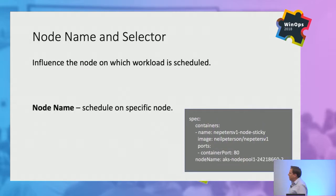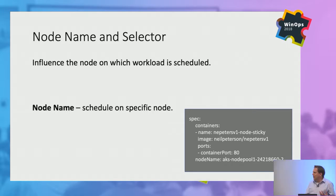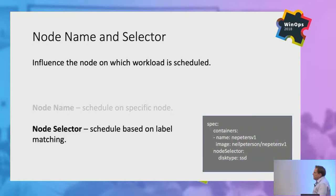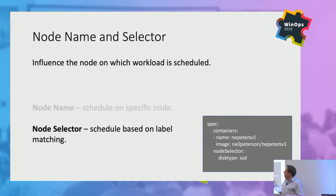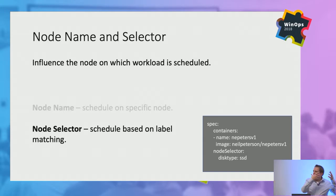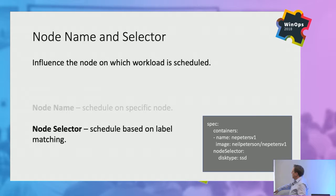With node name, we can just specify to put this work on that node — not very helpful, but there are edge cases. More helpful is node selector: we can add labels to nodes and say I want this pod to be scheduled on any node that has this label. The canonical example is SSD — I've got a big cluster, on these five nodes I have SSD drives, and I want high-performant workload to always get on those nodes. Label them with SSD and there you go.